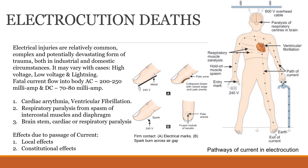Alternating current means the current flows in two different directions in a pathway, which is why it is called alternating current. When current flows in only one direction, it is called direct current. The most fatal threshold for direct current is 70 to 80 milliamperes, while for alternating current, fatality occurs at 200 to 250 milliamperes.